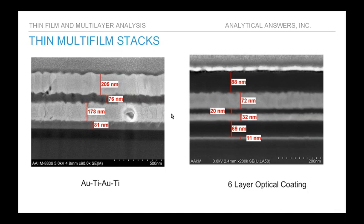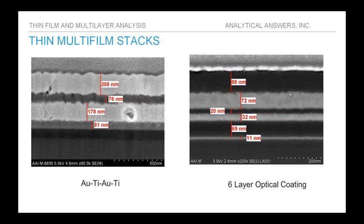A couple of quick examples of SEM images on very thin film stacks: on the left is the same gold-titanium bilayer structure, showing increased resolution and a very clean FIB cross-section with very little smearing of the soft gold layer. You can see some of the grain structure within the gold as well as some embedded voids — difficult to do with conventional polished cross-sectioning. On the right is a six-layer optical coating with a variety of materials and layer thicknesses; the SEM is able to resolve all of them with a very clean cross-section.